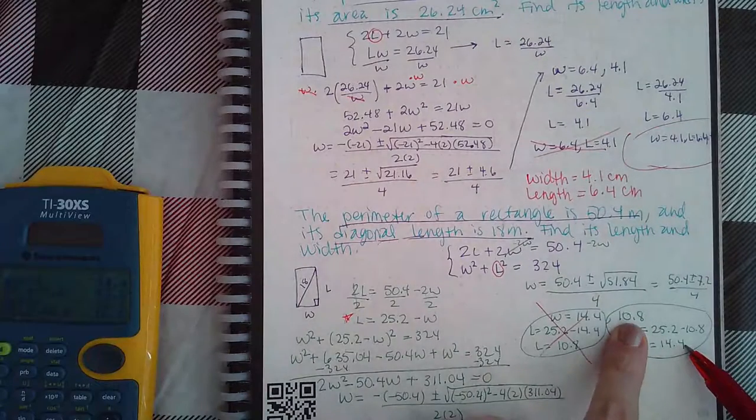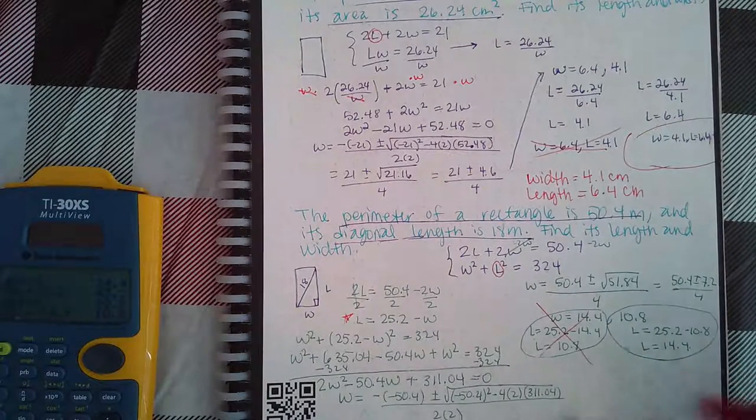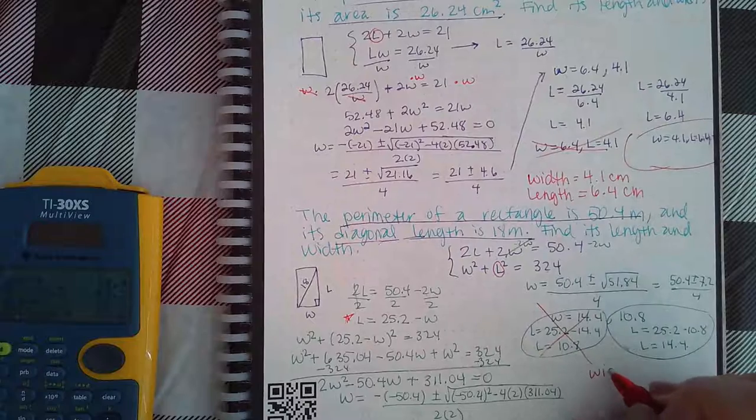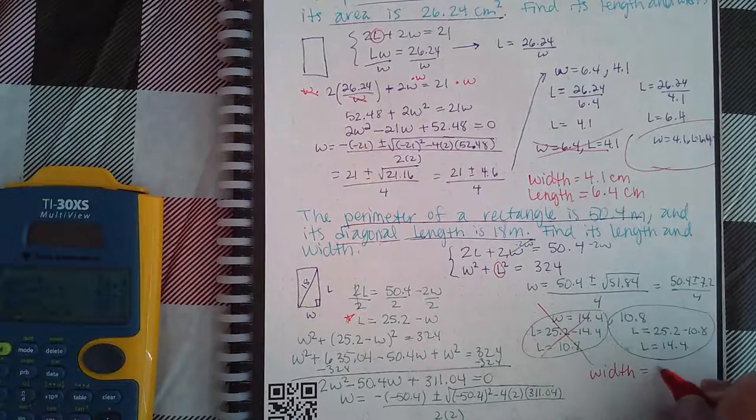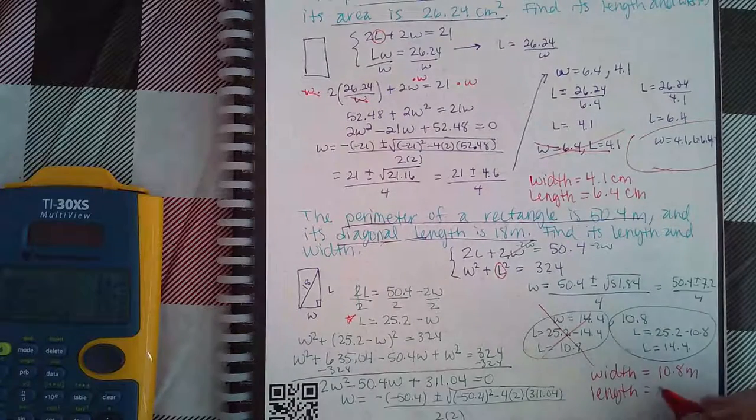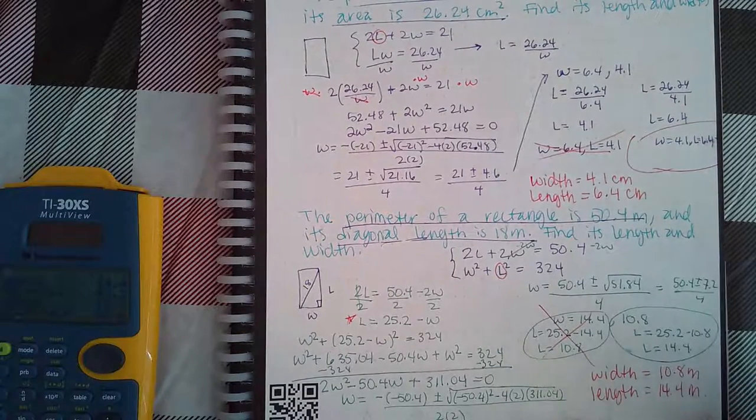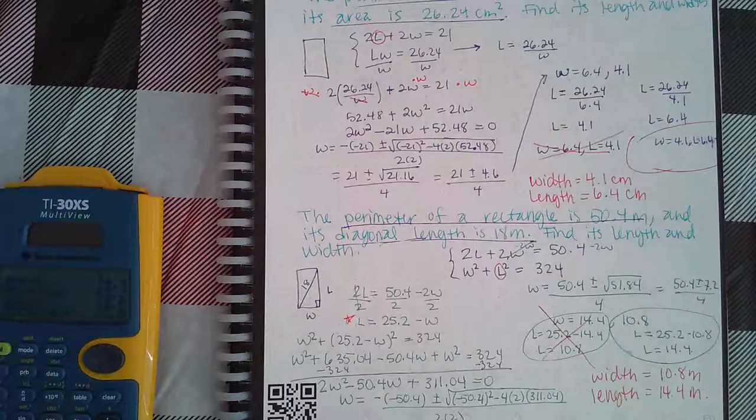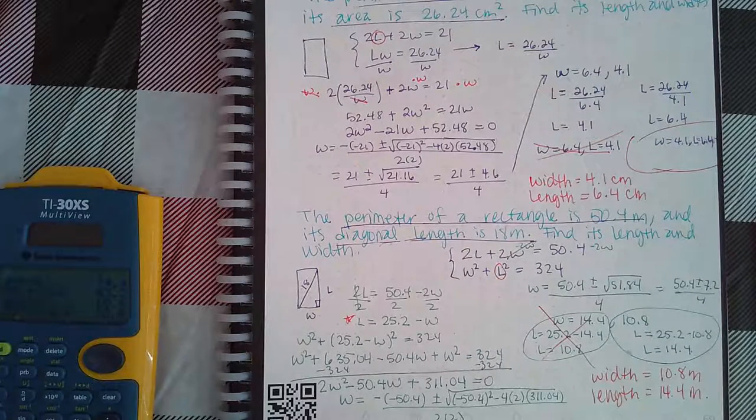So when you go to type it in, you're going to type in for the width 10.8 meters, and then for the length you're going to type in 14.4 meters. And make sure you type in the correct one in the correct box.